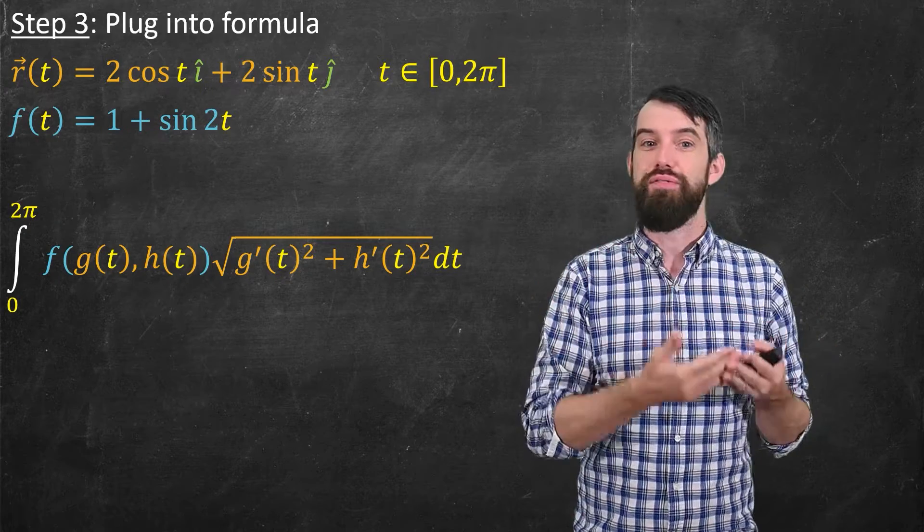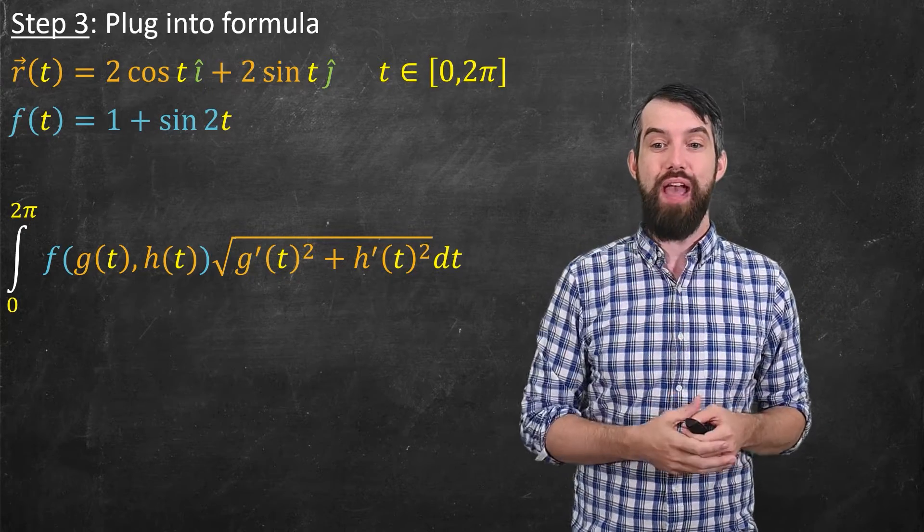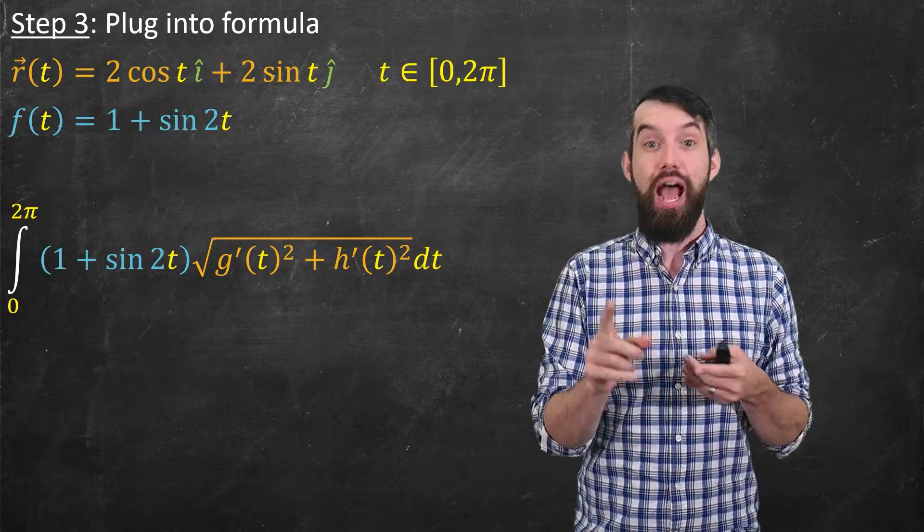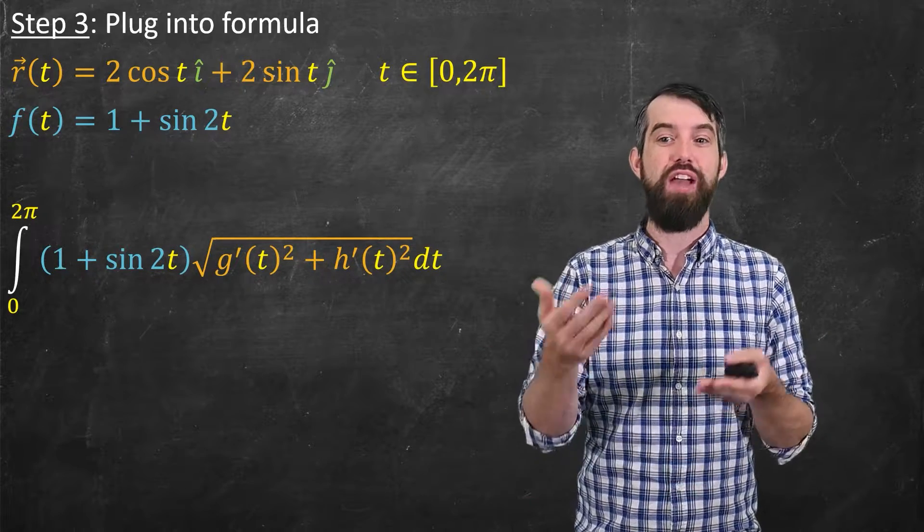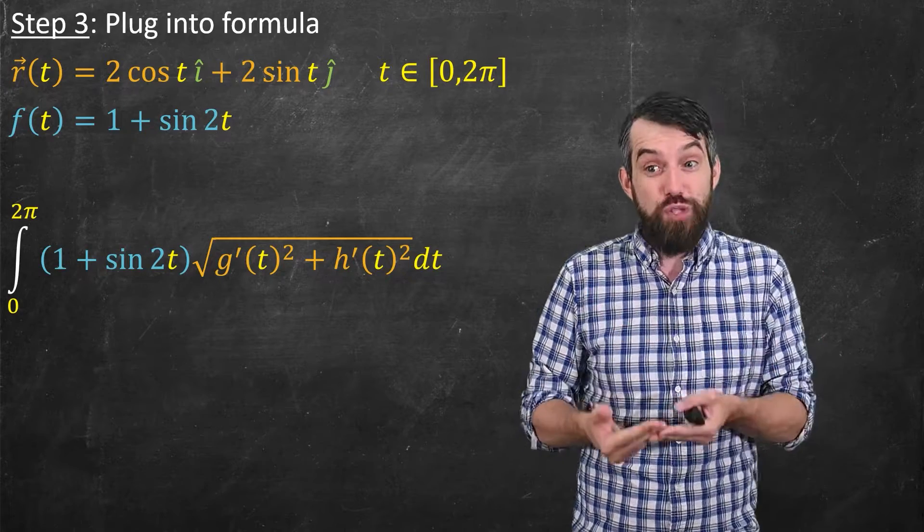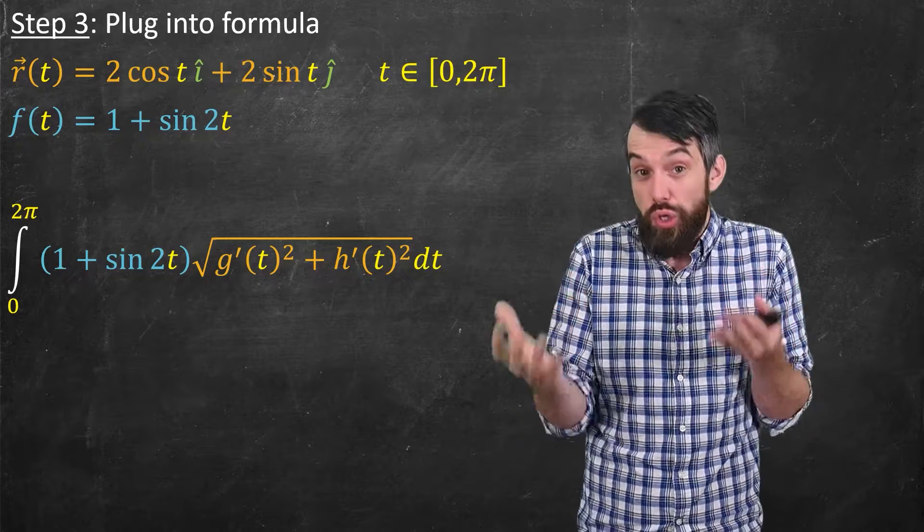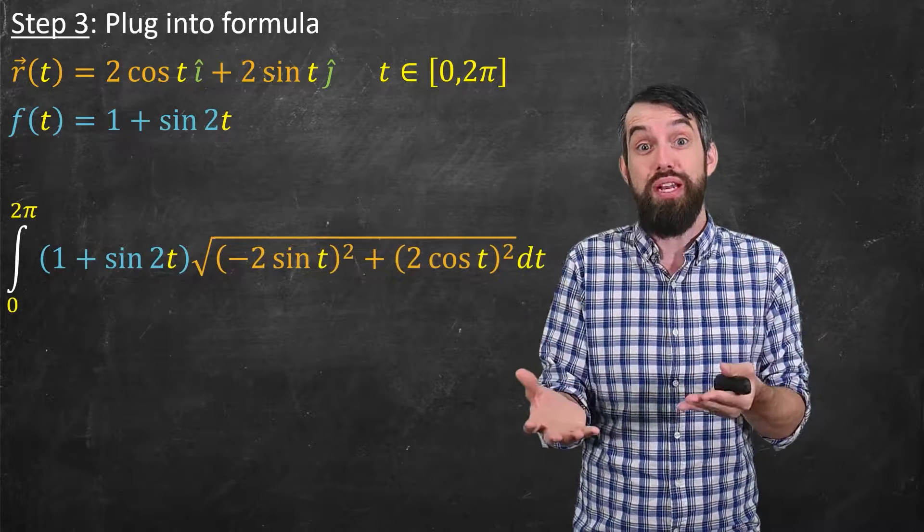Next, there's an f of g of t and h of t, and we've computed what that f is going to be. It's just this 1 + sin 2t, so I plug that in. And then finally, underneath the square root, I have my g prime, which is 2cos t, and my h prime, which is 2sin t. I plug those in as well, and I get this new expression. This is substituting in the functions I have.